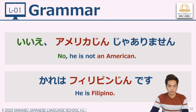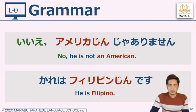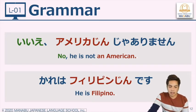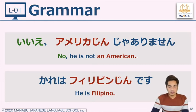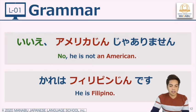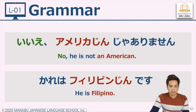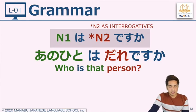If you answer no, the word for no is 'iie.' We use the Noun 1 wa, Noun 2 pattern to answer, but since it is negative, we use ja arimasen instead of desu. If you answer yes, 'hai' in Japanese means yes — hai, amerikajin desu. So: iie, amerikajin ja arimasen — not an American. Then you can follow with the correct answer: kare wa — kare in English means he — kare wa filipinjin desu. He is a Filipino.